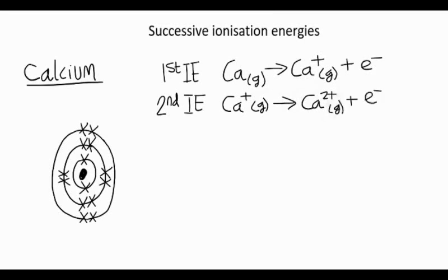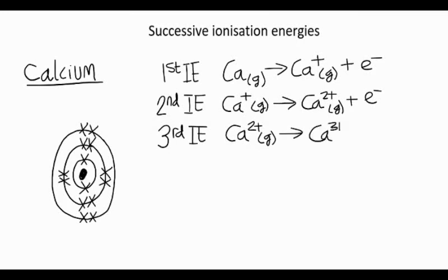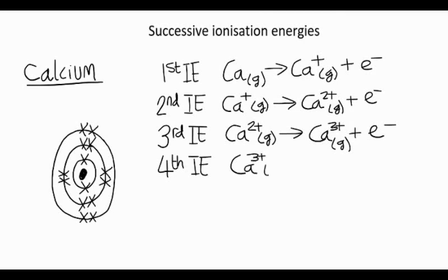If we try and remove an electron from that calcium 2 plus ion, we're removing the third electron, so it's the third ionization energy. It takes even more energy, as we're now removing a negative electron from a 2 plus ion. We make a calcium 3 plus ion plus an electron. So for the fourth ionization energy, we take our calcium 3 plus ion, we remove an electron, and we make a calcium 4 plus ion.